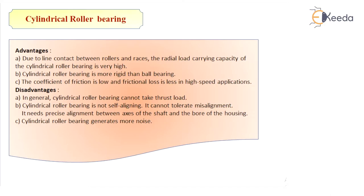The next type is cylindrical roller bearing. When maximum load carrying capacity is required in a given space, the point contact in ball bearing is replaced by line contact of the roller bearing. Cylindrical roller bearing offers the following advantages: due to line contact between rollers and races, the radial load carrying capacity is very high. It is more rigid than ball bearing, and the coefficient of friction is low with less frictional loss at high-speed conditions.